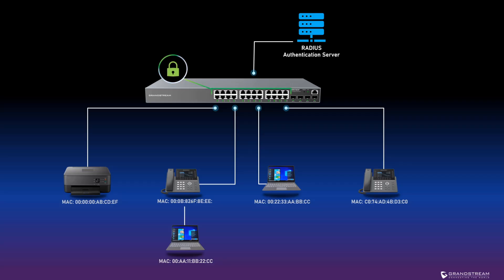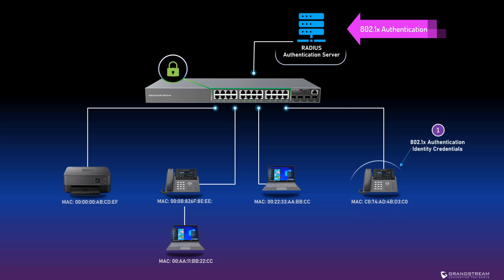In this video guide, we will use this network configuration example to demonstrate how to configure identity authentication on a GWN switch. We will cover four ways of implementing identity authentication. A RADIUS authentication server will be required for 802.1x authentication methods. When 802.1x port-based authentication is enabled, the switch prompts the device for authentication and begins relaying authentication messages between the device and the RADIUS authentication server. All identity credentials are entered and stored in the server. It is worth mentioning that this method works only with devices that are 802.1x compliant.